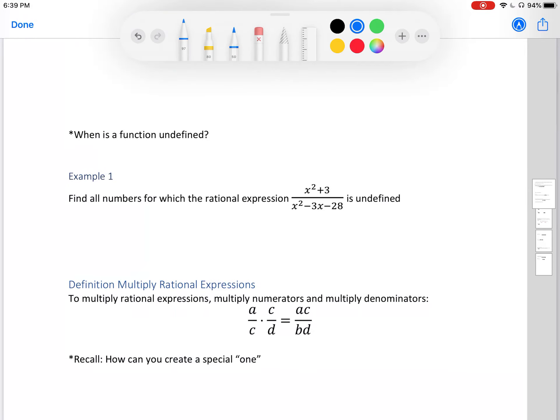Now recall from last section 4.8, we talked about when a rational expression is undefined. Well, it's undefined where I have a situation where I have a zero in the denominator. That's a big problem. It makes my function undefined.